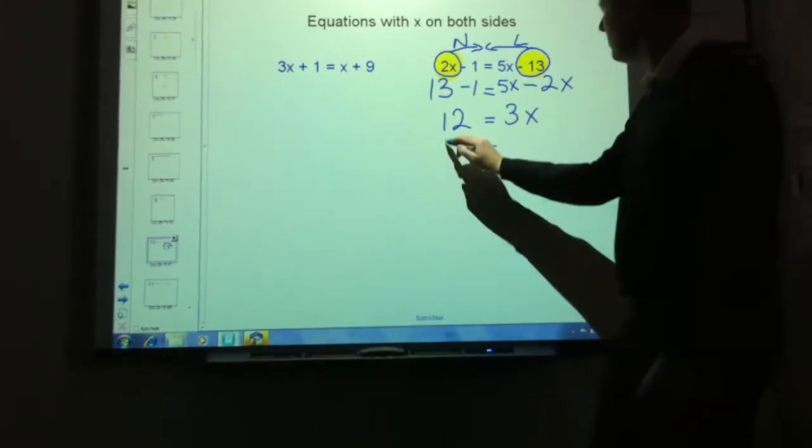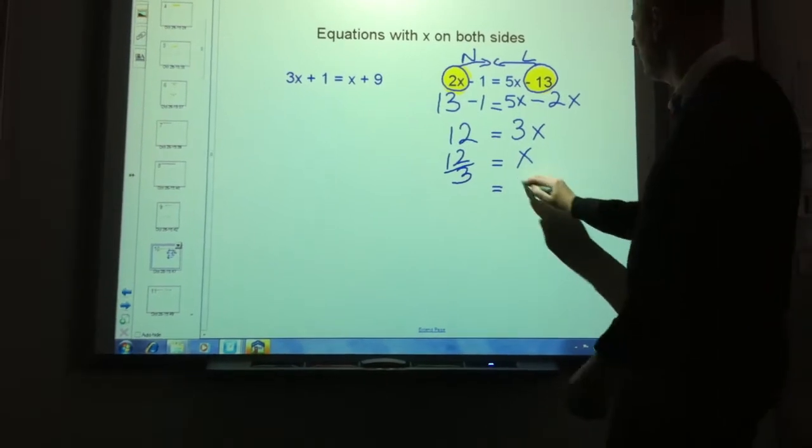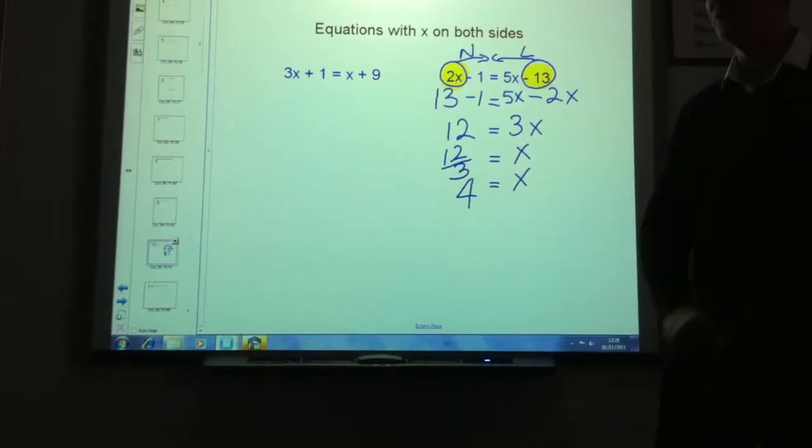Now we escalate to the three down to get twelve divided by three is x, or x is four.